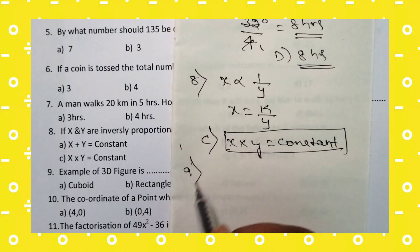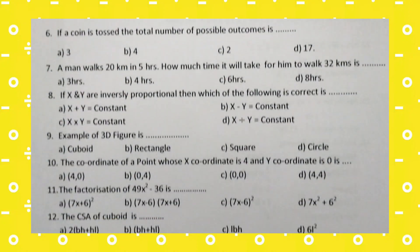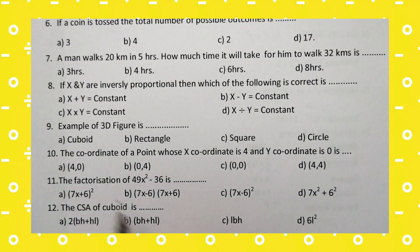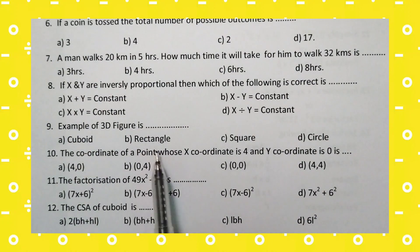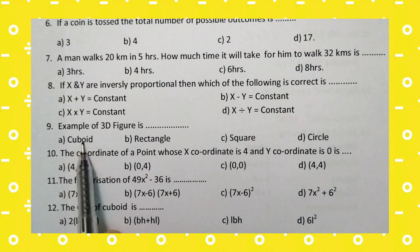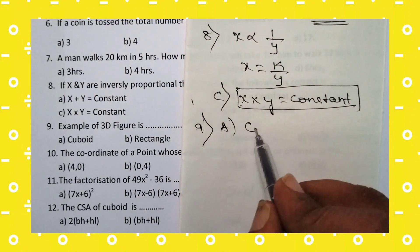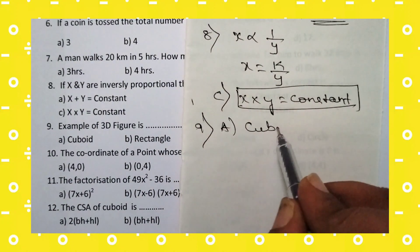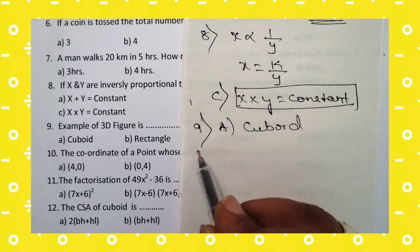Ninth question: an example of a 3D figure. The options are cuboid, rectangle, square, and circle. The right answer is option A: cuboid. Cuboid is a 3D figure, while rectangle, square, and circle are 2D figures.